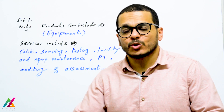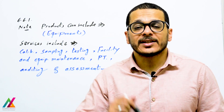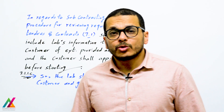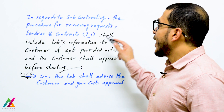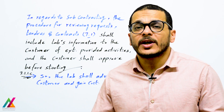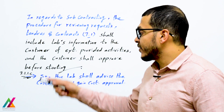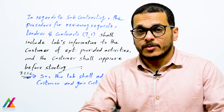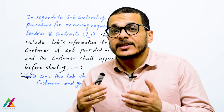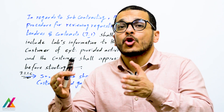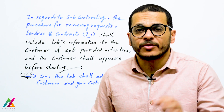Any external provider supplying a service or product to the lab shall be suitable and shall meet the requirements of this document, the lab, and the lab's customer. Regarding subcontracting, the procedure for reviewing requests, standards, and contracts — covered in 7.1 — shall include informing the customer about externally provided activities. Per clause 7.1.1(c), the lab shall advise the customer of activities to be performed by an external provider and gain customer approval before starting.